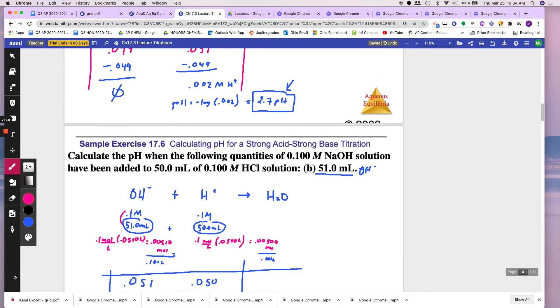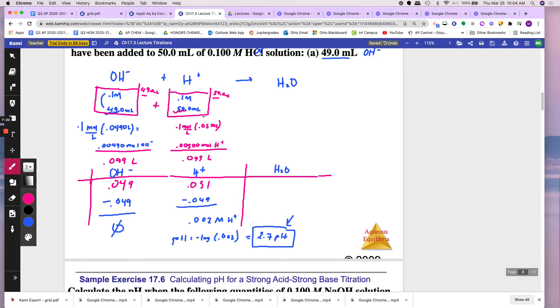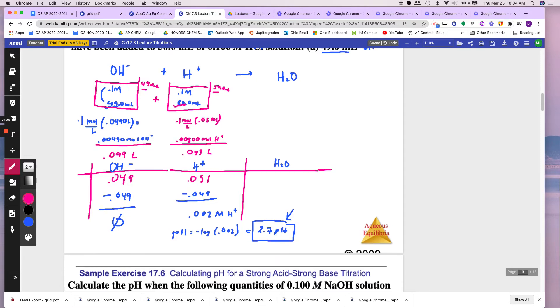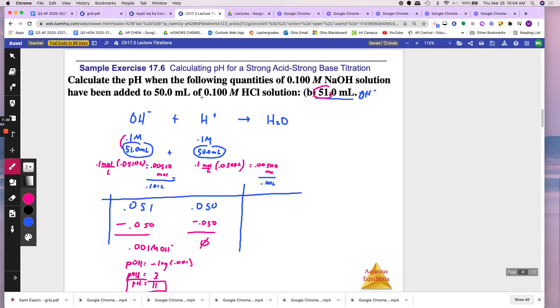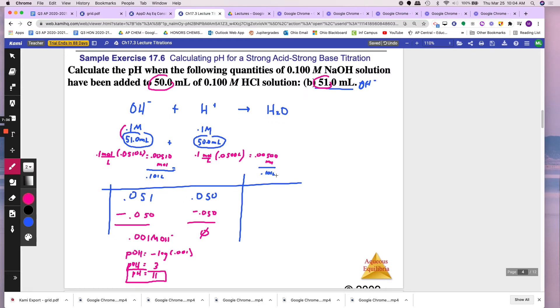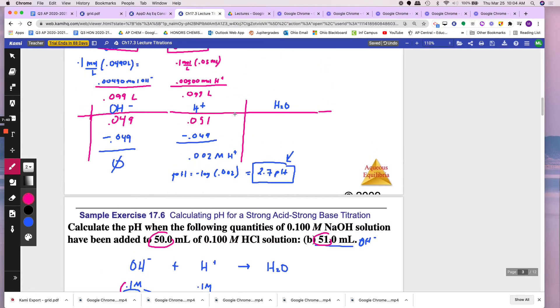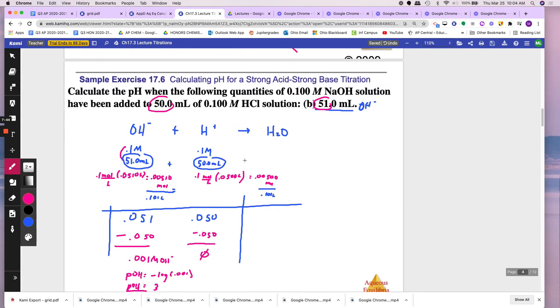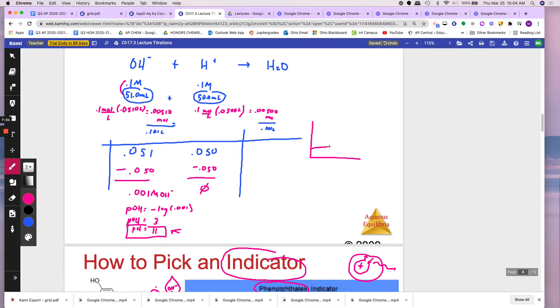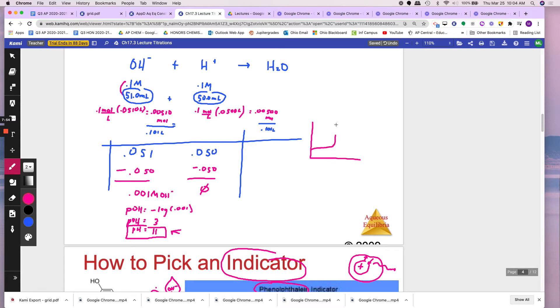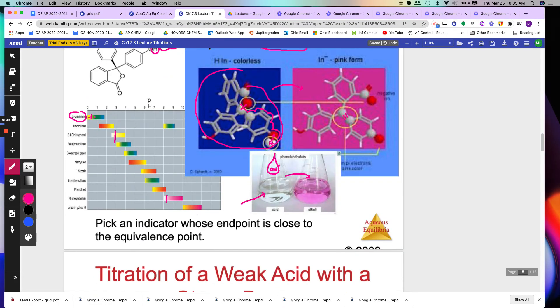So I just want you to see what happened here. Here, you have only 1 milliliter more of the H+, right? Because it was from 49 to 50. And here, you have 51 to 50. You have 1 more milliliter of the base. Just 1 milliliter made your, or actually 2 total, made it jump from 2.7 pH all the way to 11.